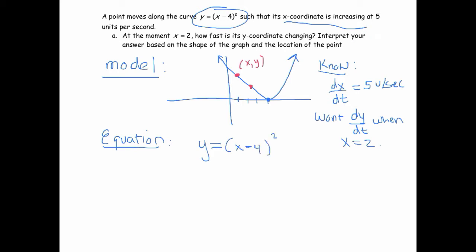And now we need to take the derivative with respect to time. So dy/dt equals 2(x-4) times dx/dt, because of the chain rule. I hope if you've been watching these videos at this point that is almost instinctive, so that you don't even have to think about it, it just comes naturally.